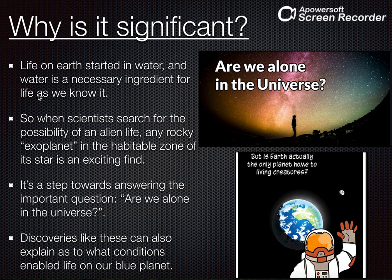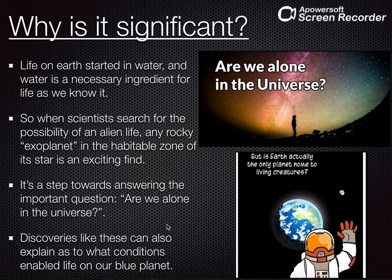Life on Earth started in water, and water is a necessary ingredient for life as we know it. Hum jaante hain pani se hi zindagi shuru hoi thi Earth pe. Toh agar in planets pe liquid water possible hai, toh shayad in planets pe life bhi possible ho sakti hai. Ye jo finding hai — Goldilocks zone — it is a step towards answering the important question: are we alone in the universe? Kya aliens hain? Alien life possible hai? Kya aise planet exist karte hain jahan pe life possible hai? Yeh sab questions jinmein hum sab ka bahut zyada dhyaan hai — un questions ko answer karta hai research in the Goldilocks zone.